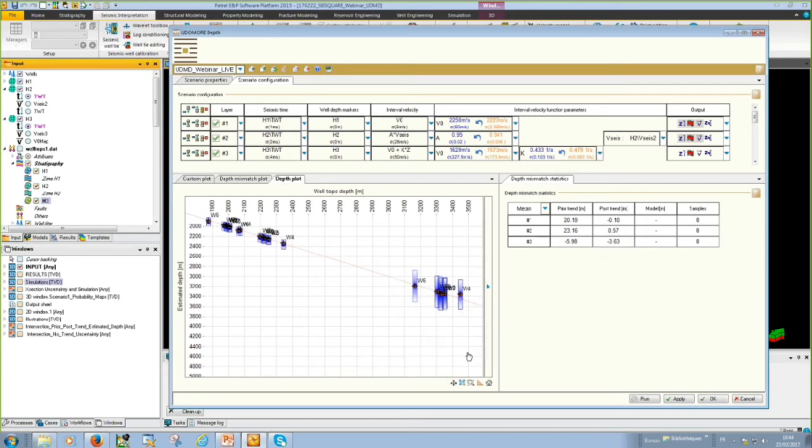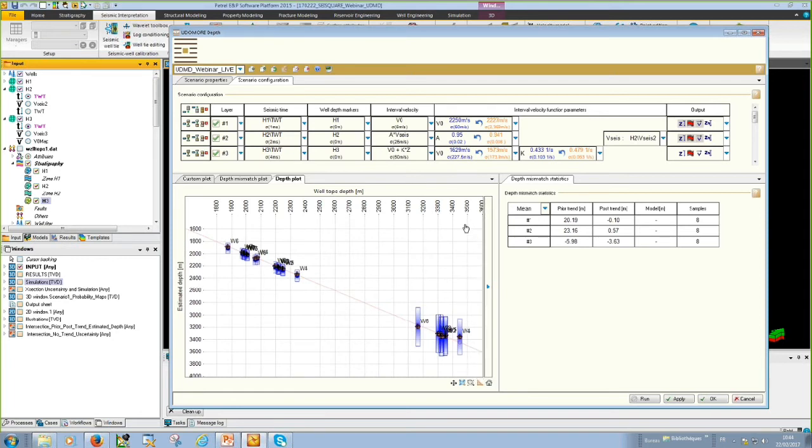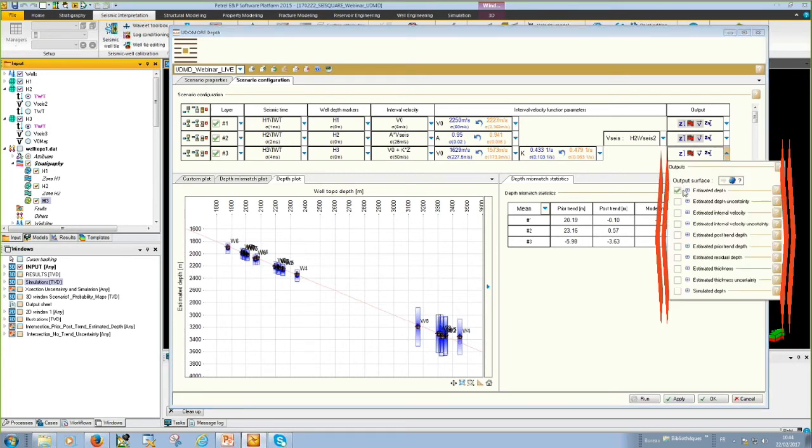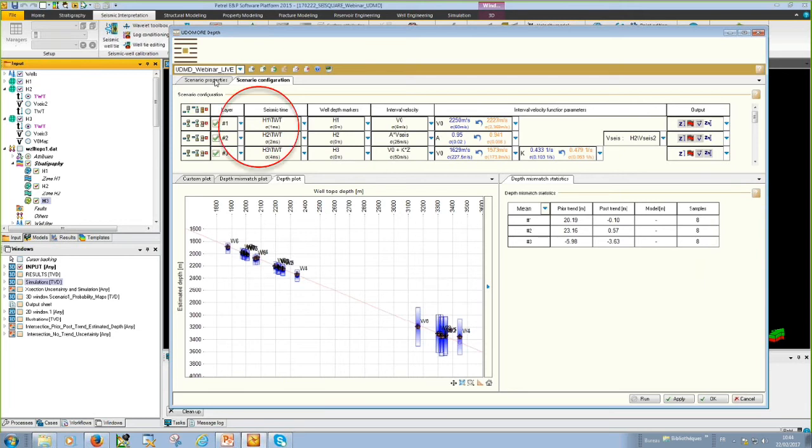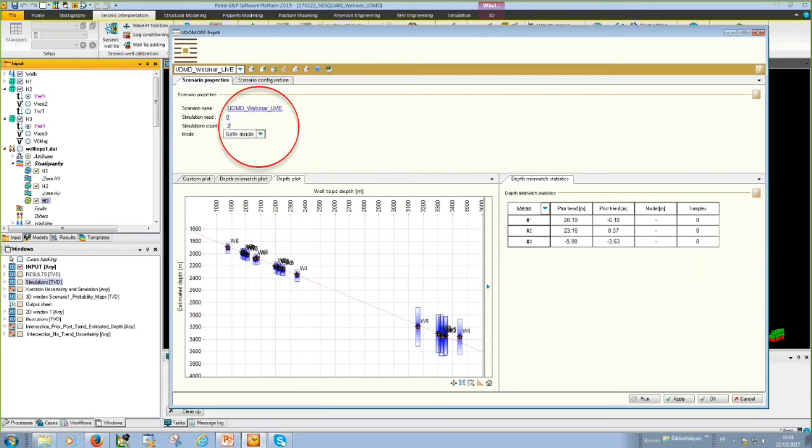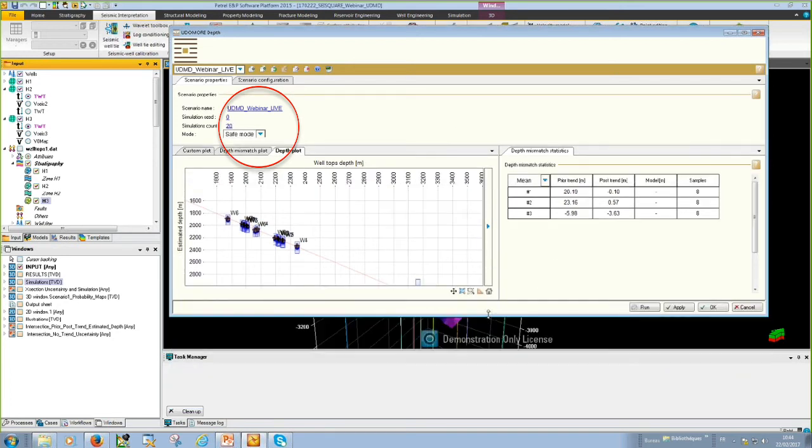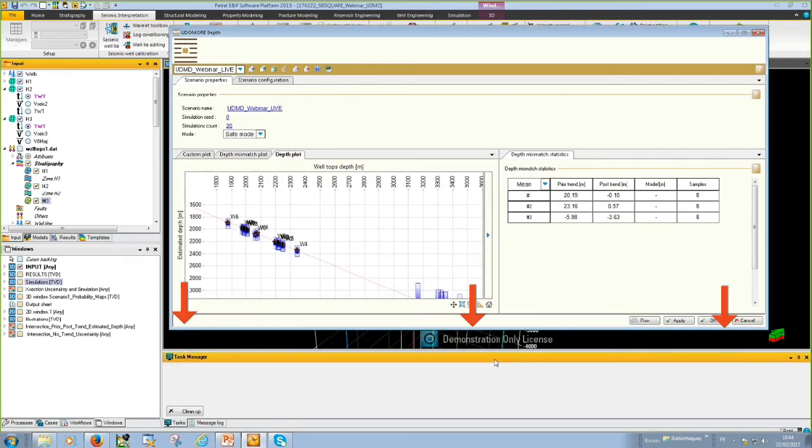Let's select our output. Our output is going to be estimated depth, estimated depth uncertainty, estimated interval velocity, estimated interval velocity uncertainty, and simulated depth. Let's go to scenario properties to configure our simulations. We could compute and simulate as many surfaces as you want. However, now we will perform just 20.